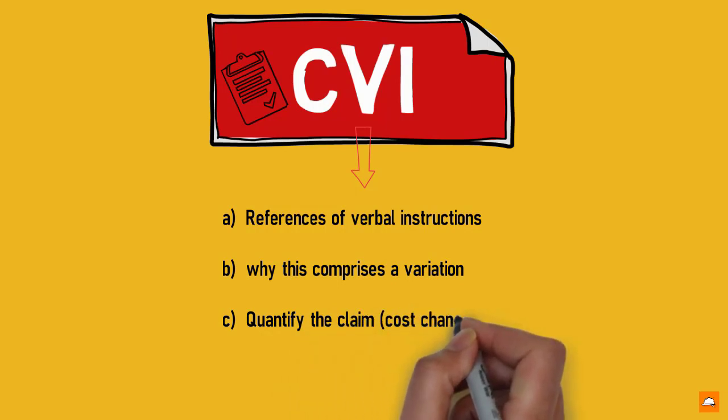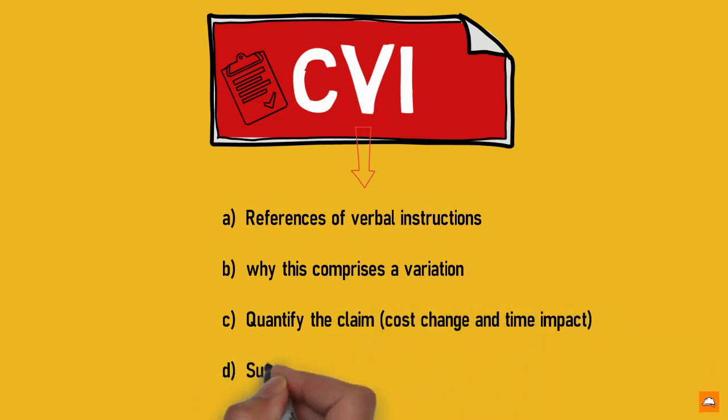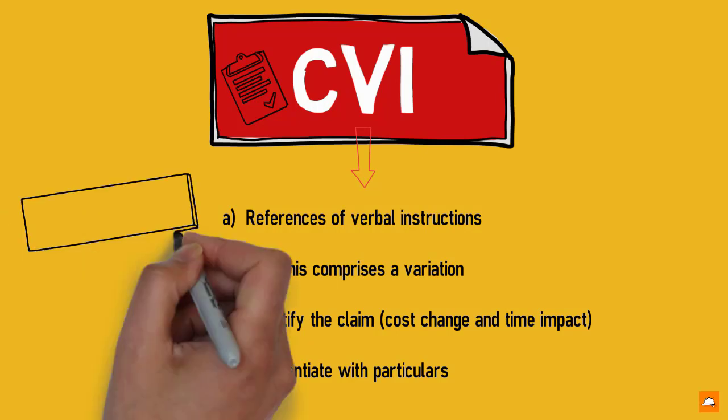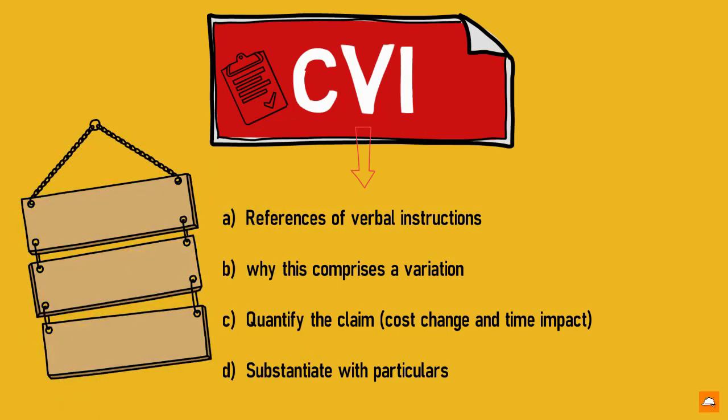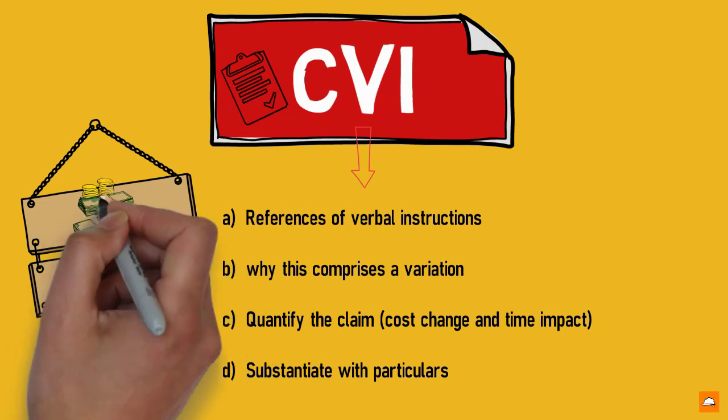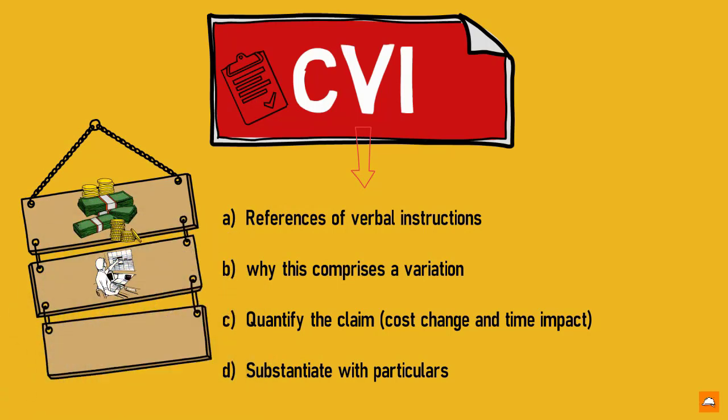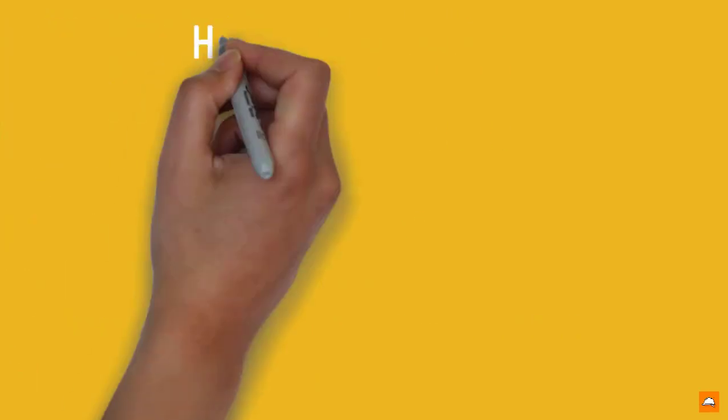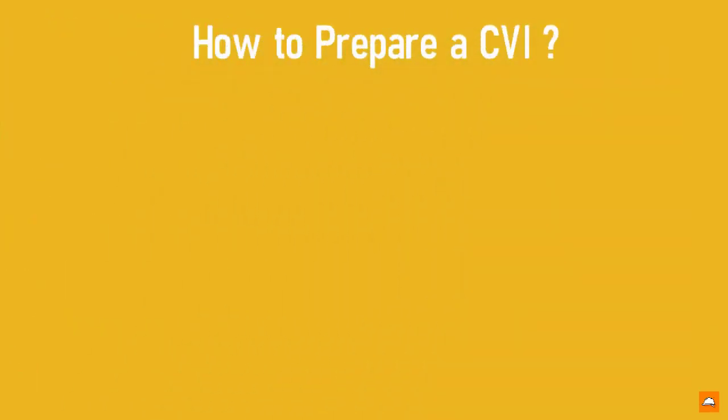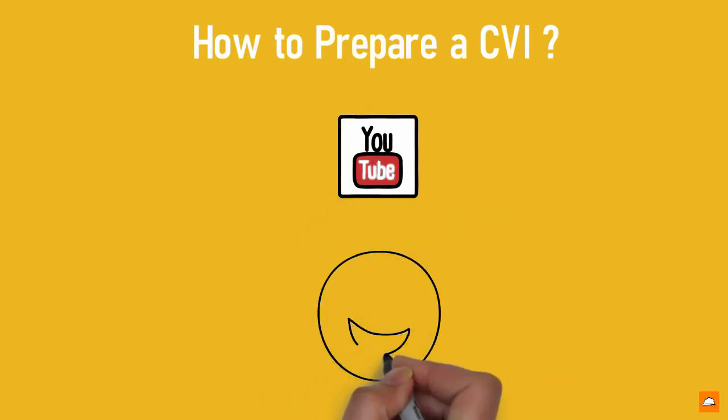Going back to our example, Kasun could reference clause 13.1B and then quantify the claim. Quantification includes cost and time impact and then go on to substantiate with particulars. Annex any rate breakdown, changes to the contract program and likewise particulars. If you want to know how to prepare a CVI, like and comment in our YouTube channel. So we will bring a tutorial about this in our next videos.